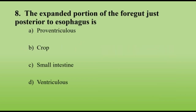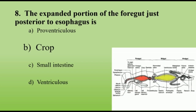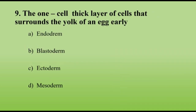The expanded portion of the foregut just posterior to the esophagus is the crop. The insect digestive system is divided into foregut, midgut, and hindgut. The foregut starts with the mouth, proceeds through the pharynx, then the esophagus, leads to a dilated portion called the crop, and ends with the proventriculus.